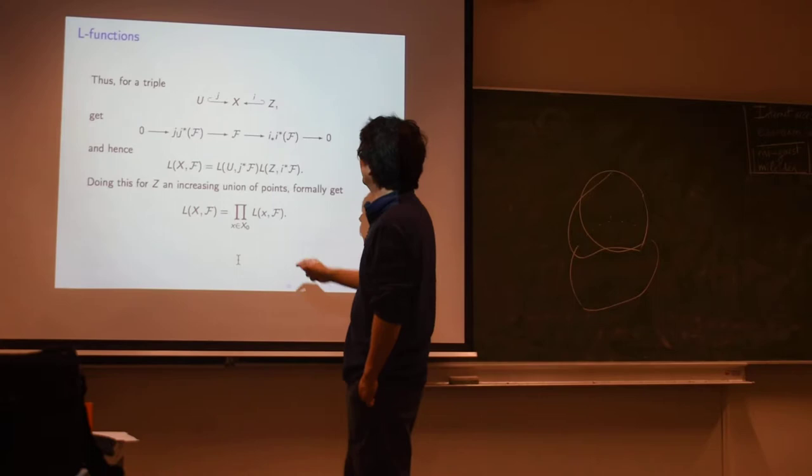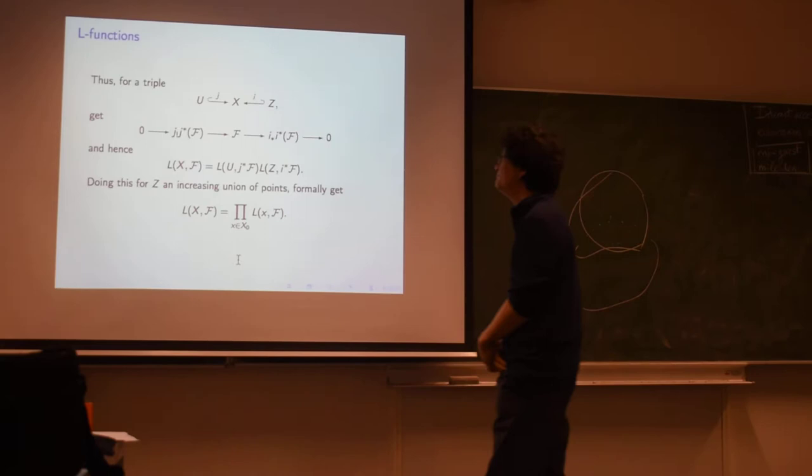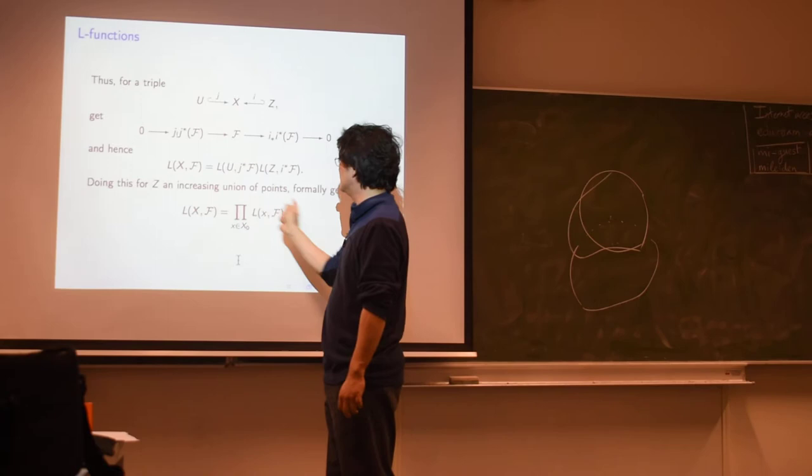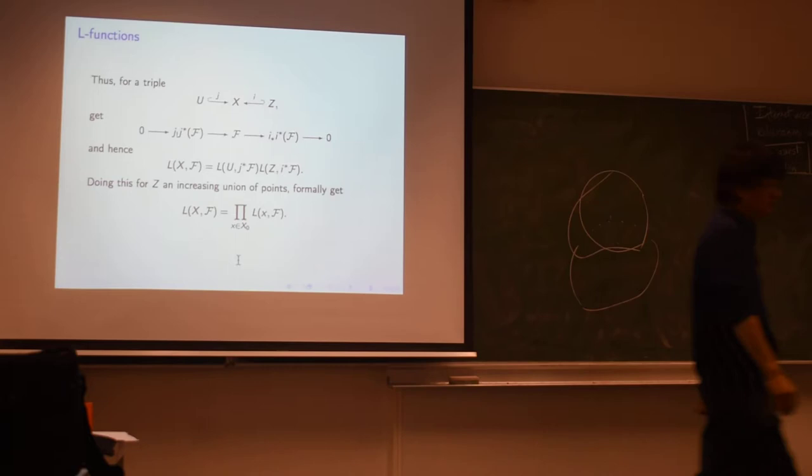I realized suddenly, as I said, I already have to generalize from locally constant sheaves. I should have been more careful stating this. But anyways, you can fill in the generalizations that are necessary. Of course, in general, you need to define it at least for perverse sheaves. Anyways, if you look at this equality for an increasing union of points, you see that, at least formally, the L-function of any sheaf has to be a product of the L-invariant associated to all the closed points. A formal consequence of multiplicativity.